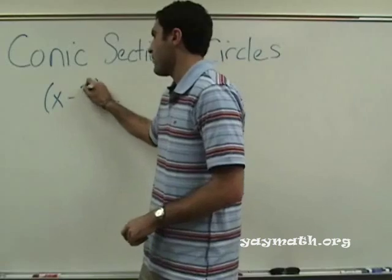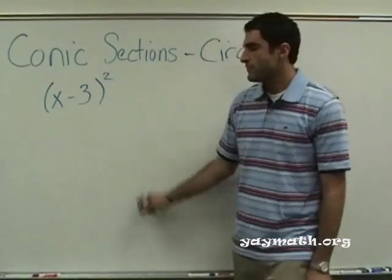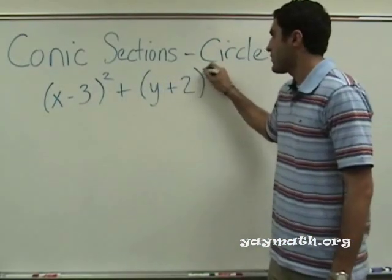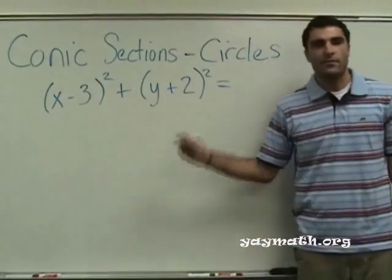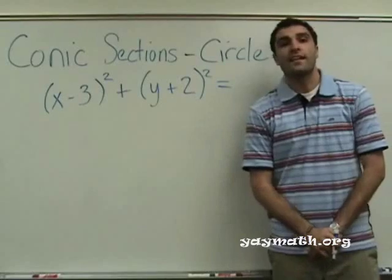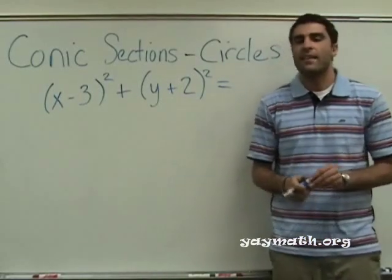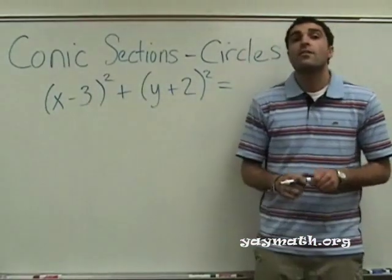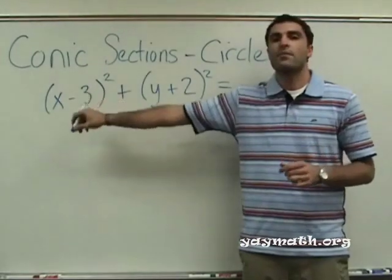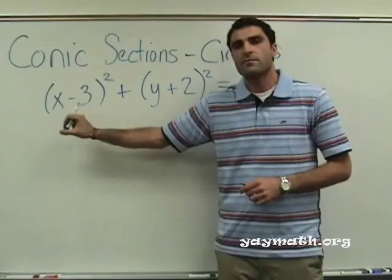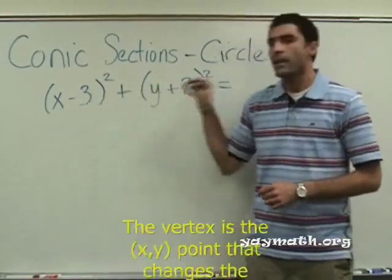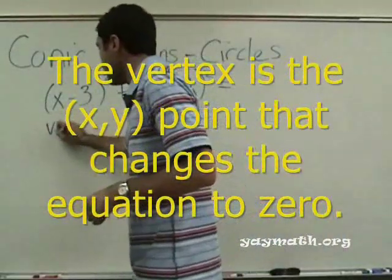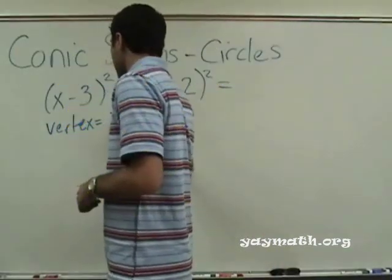x minus 3 squared plus y plus 2 squared equals... I'm going to leave this off for now. What do you think the vertex is, given what we learned about the parabola, and that the inside of the squaring is kind of like the opposite number? 3, negative 2. Remember the opposite thing with the parabola—it's like the opposite value that would make this 0. So, 3, negative 2 is the vertex.